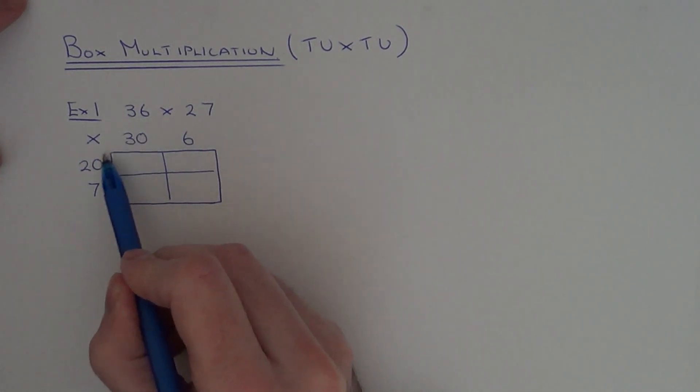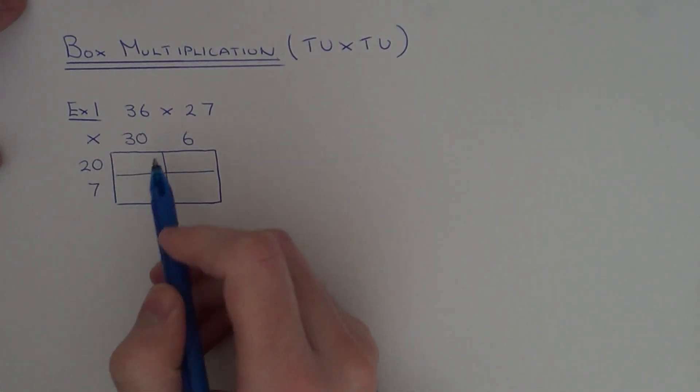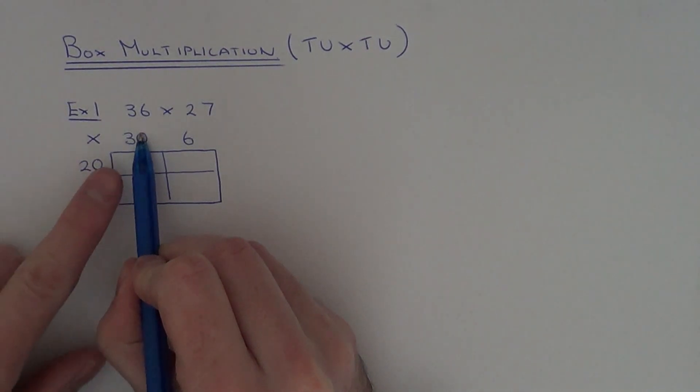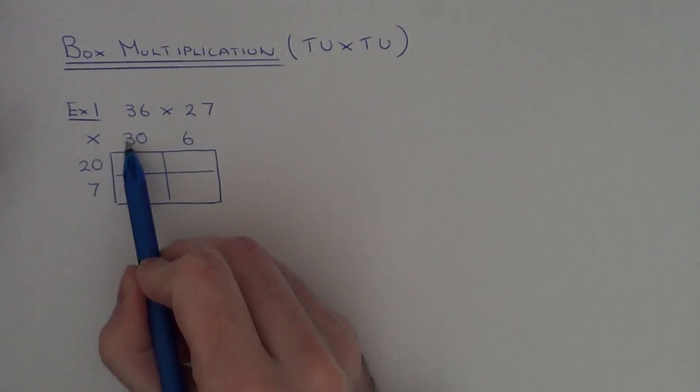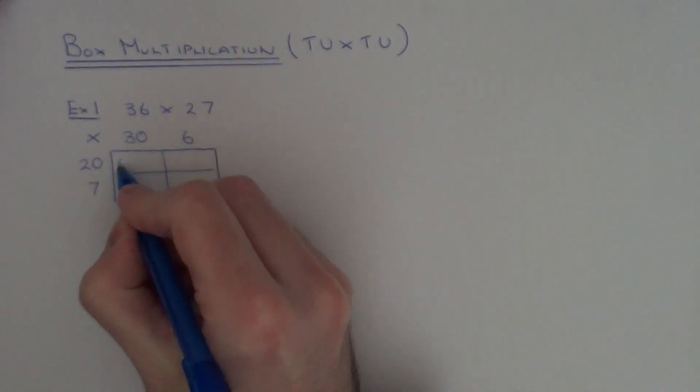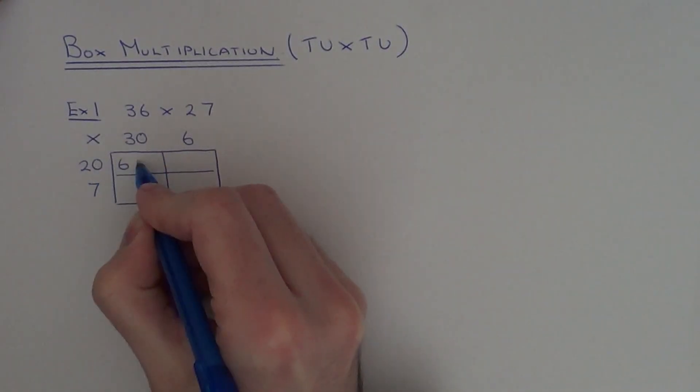So we need to do 30 times 20. A quick way to do this is to just ignore your zeros and add the zeros back on at the end. So if we do 3 times 2 is 6 and then add two zeros on.